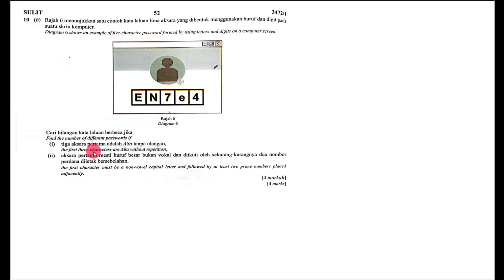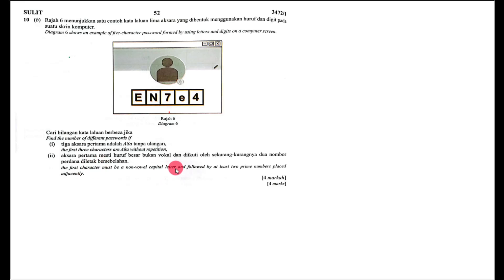For the first part, they give us a condition for the first three characters: must be capital A, digit A, and small letter A, without repetition. So in part one, they say without repetition. But for part two, they don't mention anything about repetition. The first letter must be a non-vowel capital letter, followed by at least two prime numbers placed adjacently — meaning the prime numbers must be placed side by side. Since repetition is not mentioned, I will assume repetition is allowed in the second part.